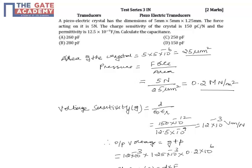Today we are going to discuss questions from test series 3, subject Transducers, for 2 marks. The topic is Piezoelectric Transducers, which is a very common topic asked in GATE papers. The question gives a piezoelectric crystal with dimensions 5×5×1.25 mm and an applied force of 5N. The charge sensitivity is 150 pC per N and the permittivity of the medium is 12.5×10⁻⁹ F per meter. We need to calculate the capacitance of the piezoelectric crystal.